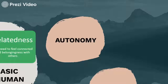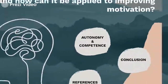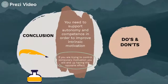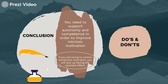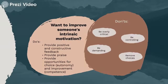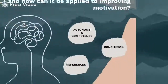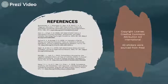In conclusion, if you were trying to control someone's motivation, you will end up having the opposite effect. In order to improve intrinsic motivation, you need to support a person's need for competence and autonomy while encouraging their personal development. Being commanding or controlling will decrease enjoyment and in turn reduce their intrinsic motivation. Try providing positive feedback and praise, and avoiding controlling and negative language.